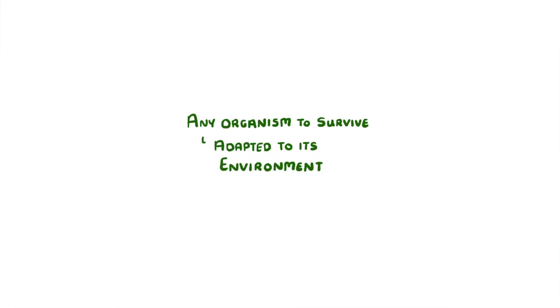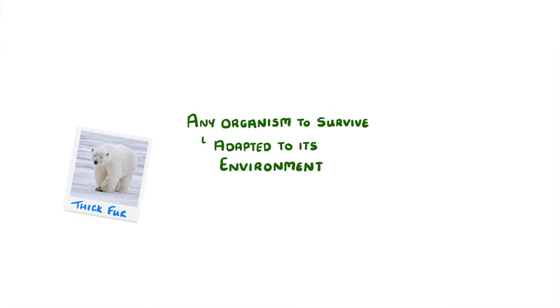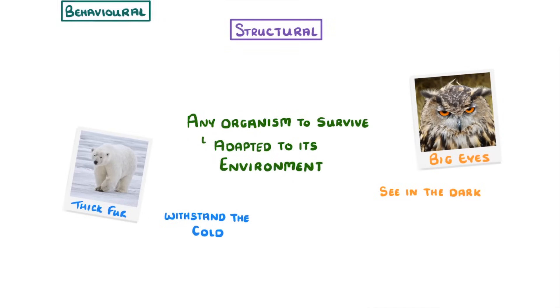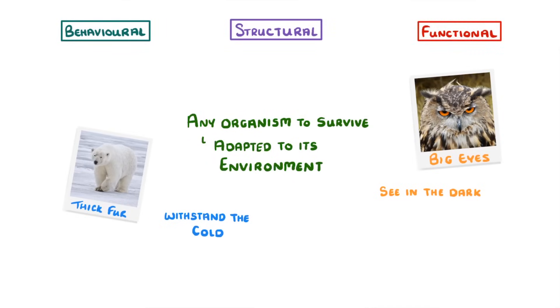In order for any organism to survive, it has to somehow be adapted to its environment. So this could be a polar bear having really thick fur to help it withstand the cold, or the big eyes of an owl that allow it to see in the dark. Because scientists love categories, they've put these adaptations into three different groups: those that are structural, behavioural, and functional.